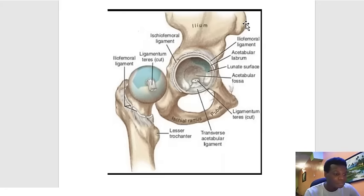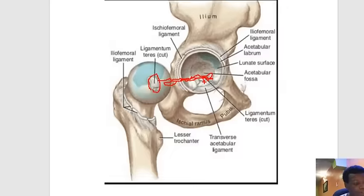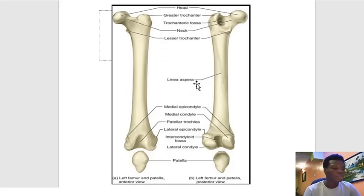On the head of the femur, here is the ligamentum teres taking origin from the fovea capitis — the fovea capitis of the head of the femur. The ligamentum teres takes origin from there and inserts into the acetabulum. So note: on the head of the femur there is a groove called the fovea capitis, and that is where the ligamentum teres originates.